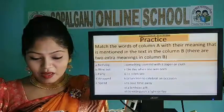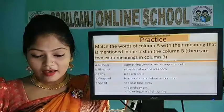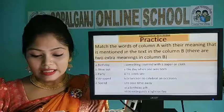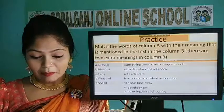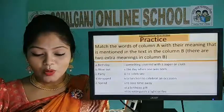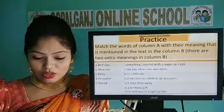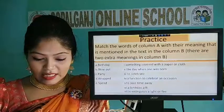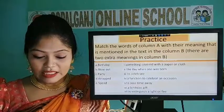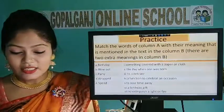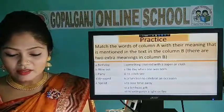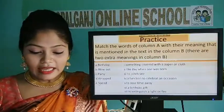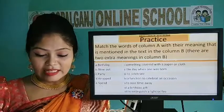Column A words: A. Birthday. B. Blow out. C. Party. D. Wrapped. E. Spent.